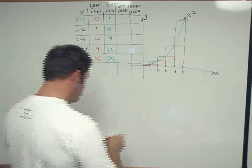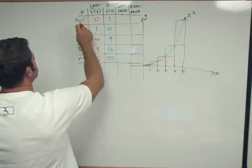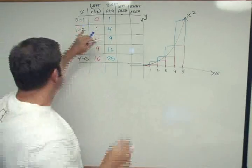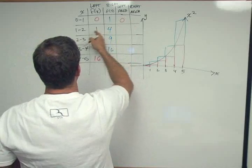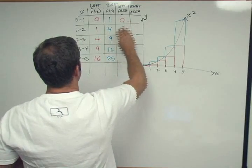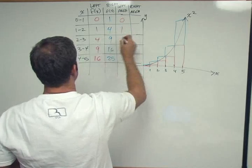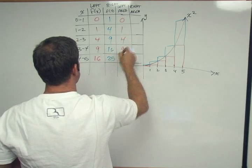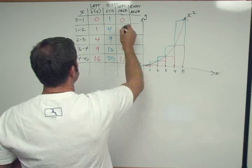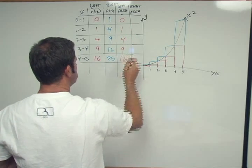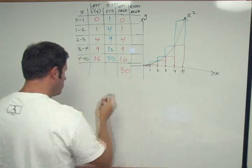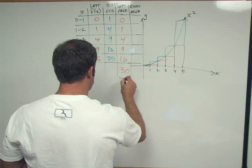So now we just have to calculate the area. So we have 0, and the width obviously is 1. So 0 times 1 is 0. 1 times 1 is 1. 4 times 1 is 4. 9 times 1 is 9. 16 times 1 is 16. Which gives us a total of 5, 14, and 16 is 30. So this would be units squared, right?